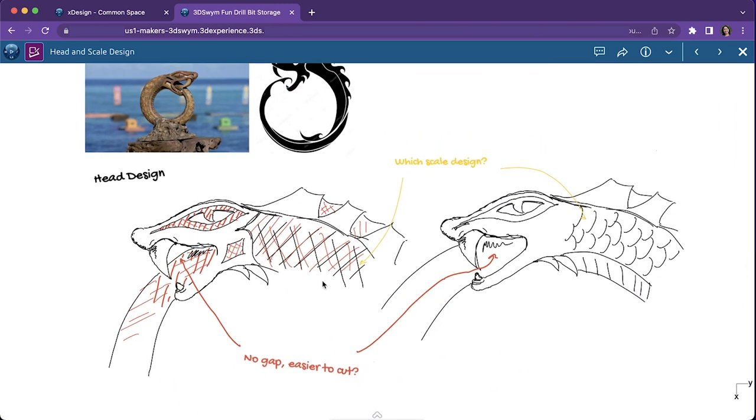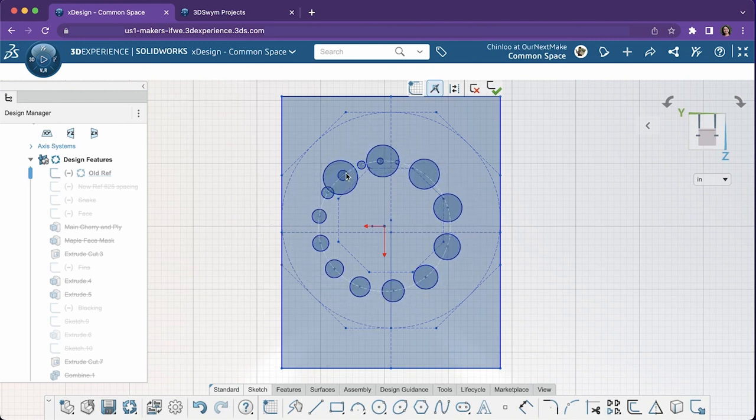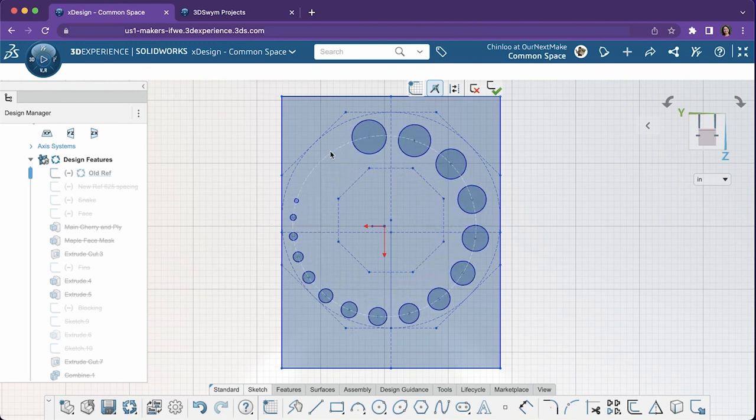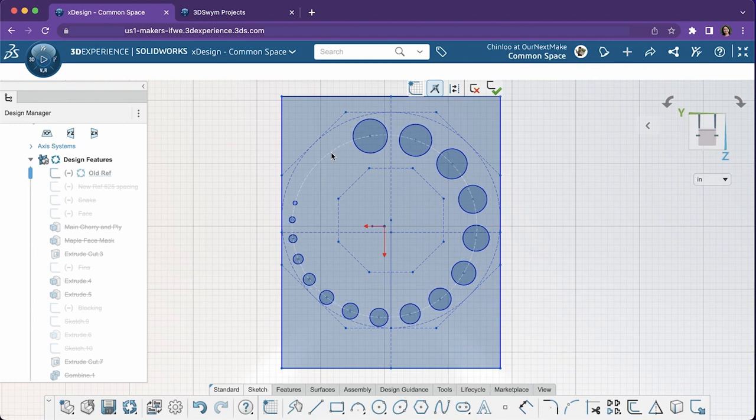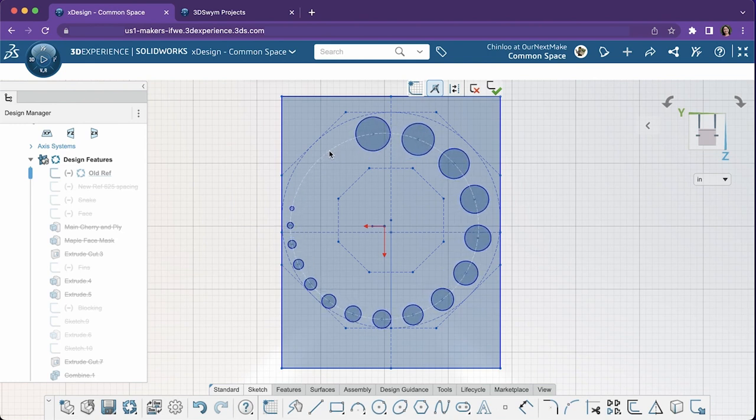So we got to work designing. I started an X design with a simple sketch that allowed me to achieve an even spacing between the various diameter Forstner bits. This parametric CAD tool lets me quickly change things and see how the design will update and make sure things will fit on the material we have at hand.